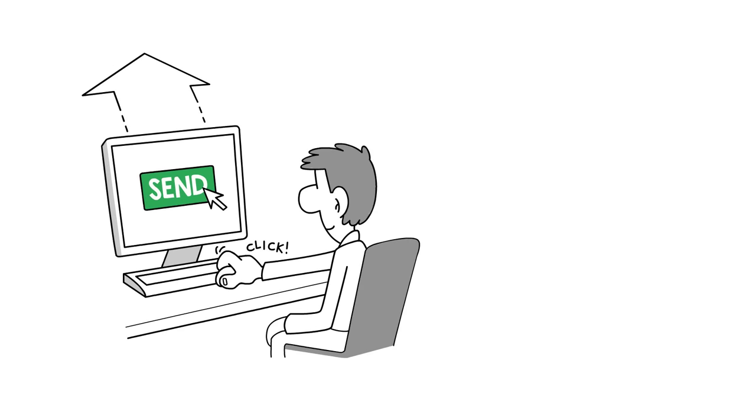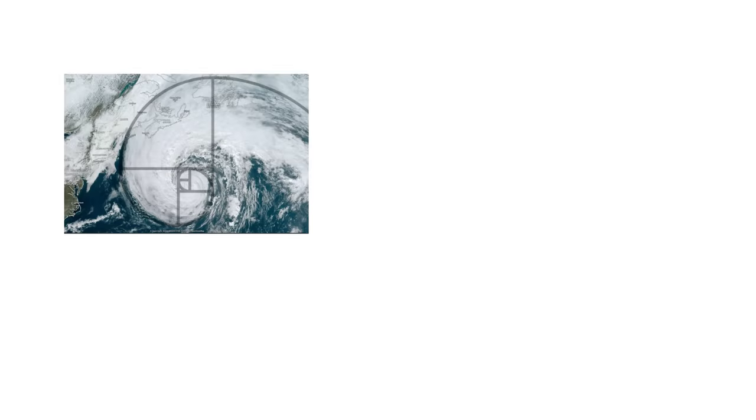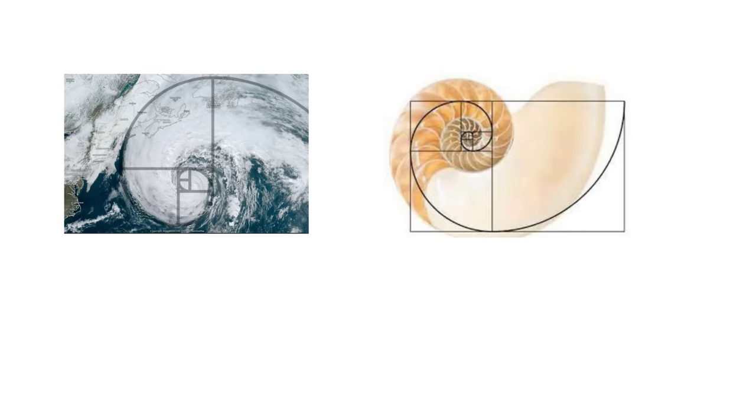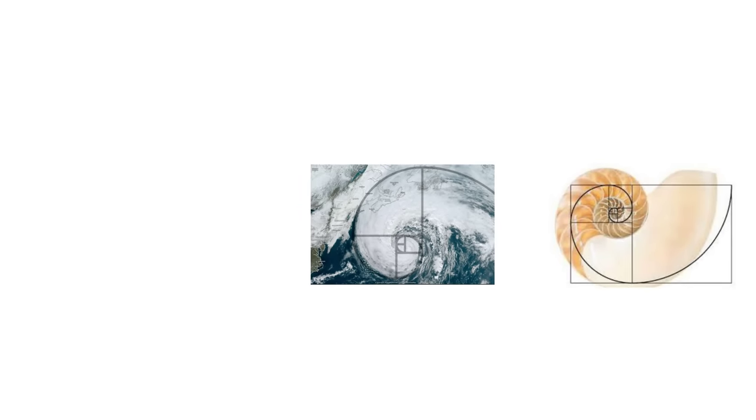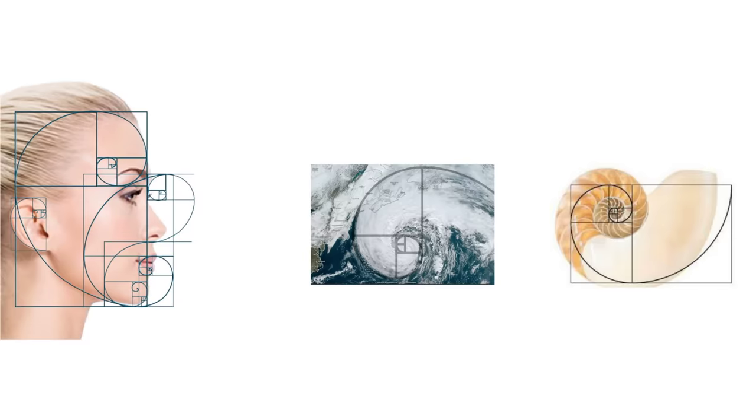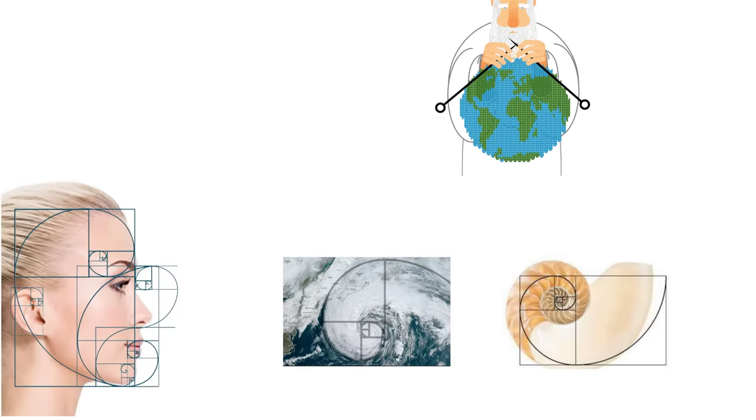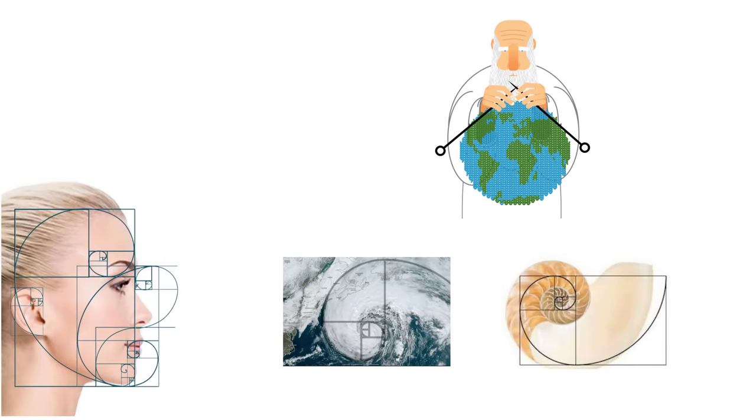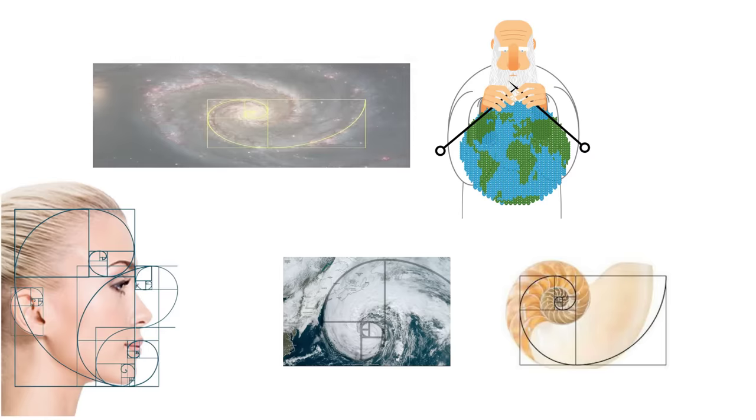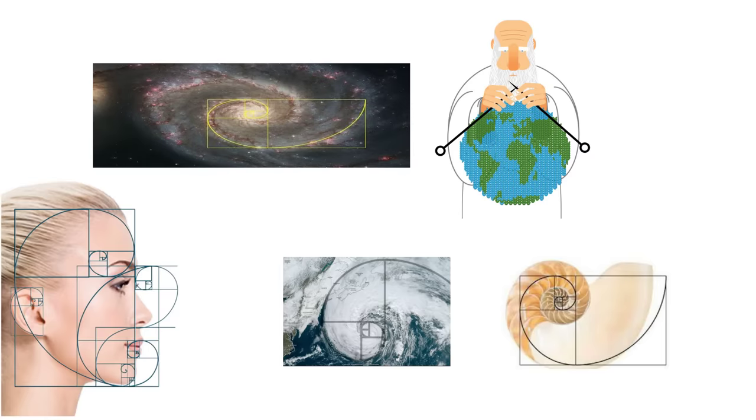This divine numerical sequence I'm referring to can be found in hurricane formations, seashell patterns, and even in the human body. I'm not implying God plays roulette, but if he did, I think this is the betting system he would use. The fact that it's found all over nature, even in the formation of galaxies, implies this sequence has extra special powers.